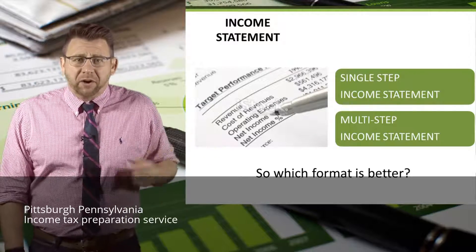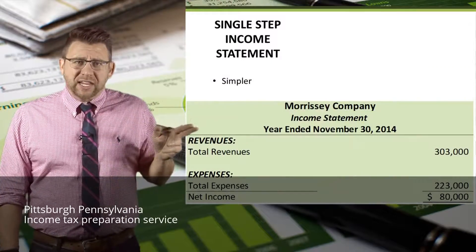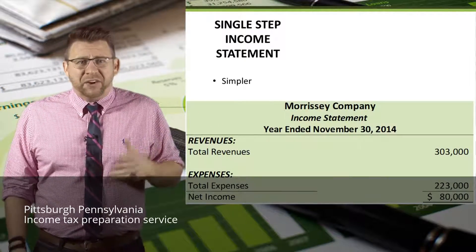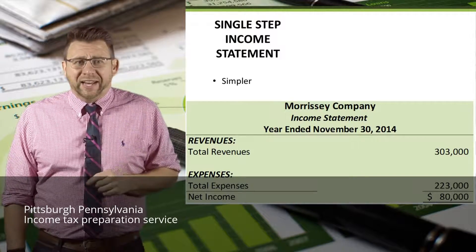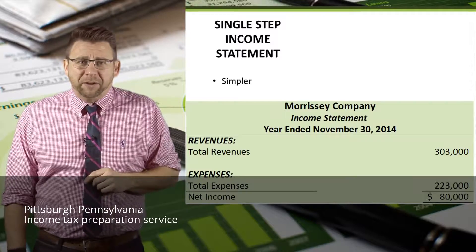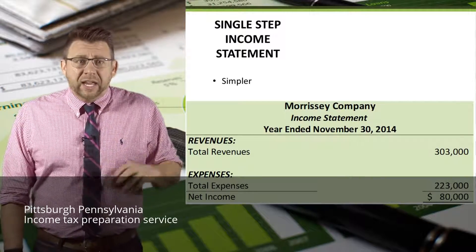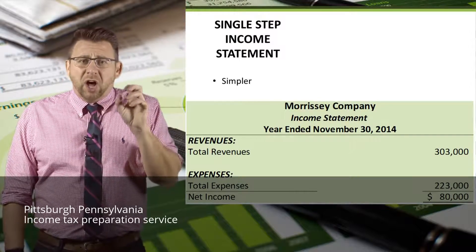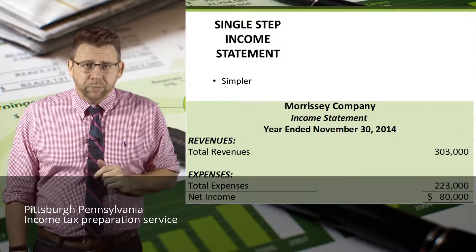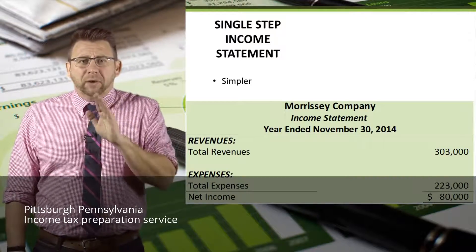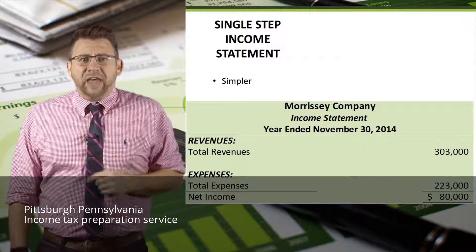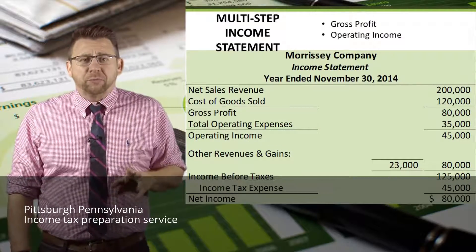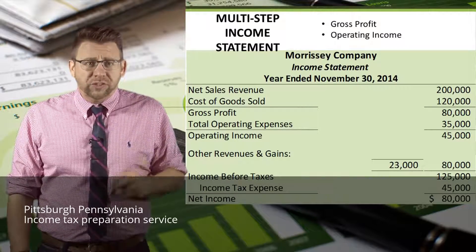Which format is better? Well, it depends. The single-step is easier to read and understand. For service firms which don't have gross profit and there isn't much benefit from distinguishing between operating and non-operating activities, it's the simple way to express profitability. But there are some drawbacks. In the example, this firm earned $80,000 of net income on $303,000 of revenue — but how repeatable is that next year? Let's answer that by looking at the multi-step format, which gives us better information about gross profit and operating income. That is why non-service firms use this format.